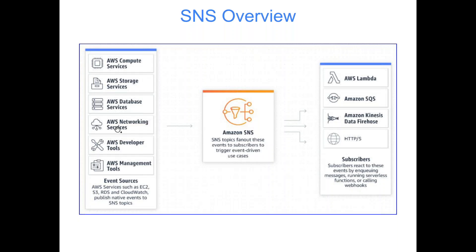On the source side, AWS compute services like EC2 can send notifications to an SNS topic. Storage services like S3, database services like RDS and Redshift, and networking/security services like security groups, subnets, and VPCs can all integrate. For example, if an unauthorized person tries to access your server on a blocked port, you can block the traffic and simultaneously send an SNS notification to alert your team.